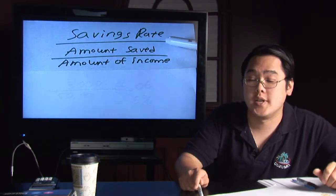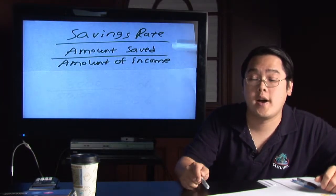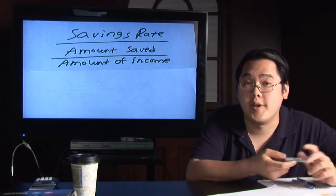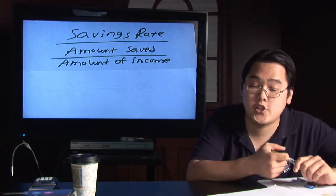The formula is: you take the amount that you save and divide by the amount of income. That gives you an idea as to how much you actually saved over the past year.